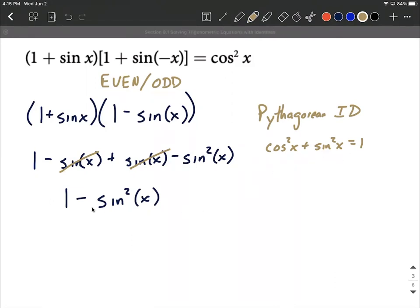What we can do is simply rearrange our Pythagorean identity. We want to see 1 minus sine squared, so to get there, we can move the sine squared to the other side by subtracting it.